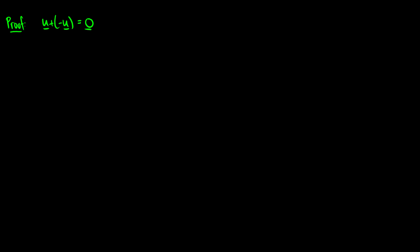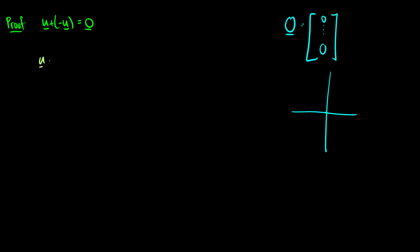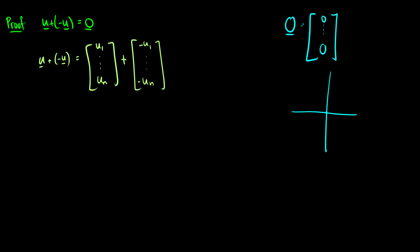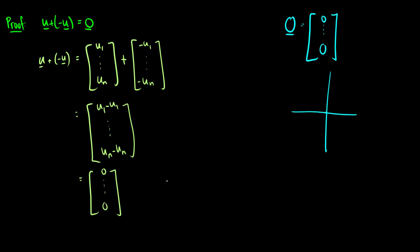We'll do one final proof: we're going to show that a vector u plus negative u equals the zero vector. When I say zero with a line under it, that means each entry in the zero vector is just zero. On a graph it looks like there is no vector — it stays at the origin. So starting with vector u plus negative vector u: that's u1 through un, plus negative u1 through negative un, which gives u1 minus u1 down to un minus un, and that's just zero all the way down — the zero vector.